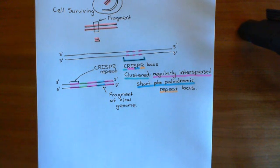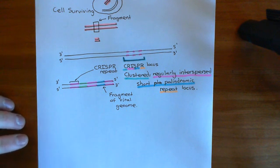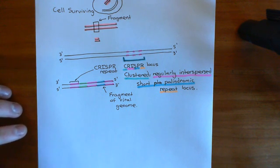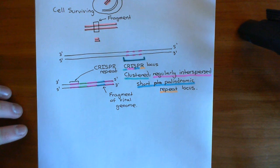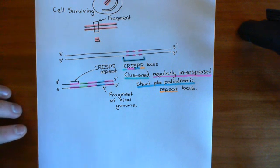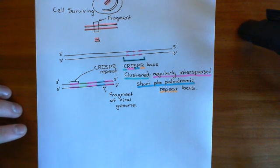Welcome back to this next video in which we are discussing the CRISPR-Cas9 system. We're currently discussing the CRISPR-Cas9 system as it appears within bacteria, and it's specifically found within Streptococcus pyogenes. There are other analogous systems found in many other species of bacteria and archaea as well, but the specific enzyme Cas9 was found in Streptococcus pyogenes. More generally, these are just called Cas enzymes.